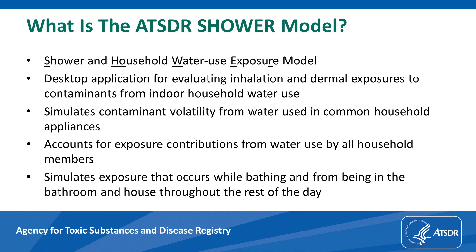The model tracks each time an appliance is used by any person in a house. Every time somebody takes a shower or a bath, the program simulates the chemical mass released into the air from the water used. It does the same thing anytime someone uses the toilet, a kitchen sink, a bathroom sink, or any other water-using appliance in the model. Based on the chemical mass released, the program calculates an average daily inhalation exposure concentration for each person in the house according to where they are throughout the day, including time spent showering and time spent elsewhere. The program also calculates dermal exposures for each person from how often they use the shower, the bathtub, and the sinks.